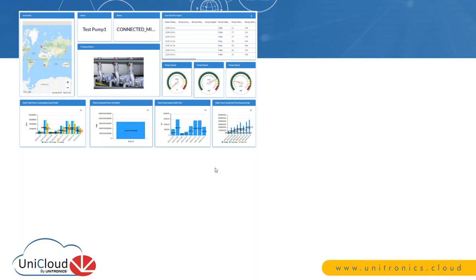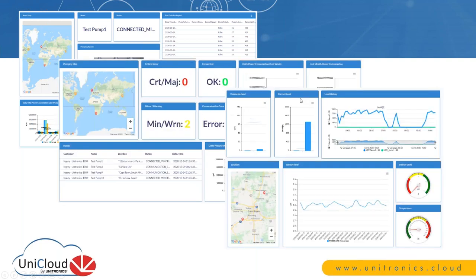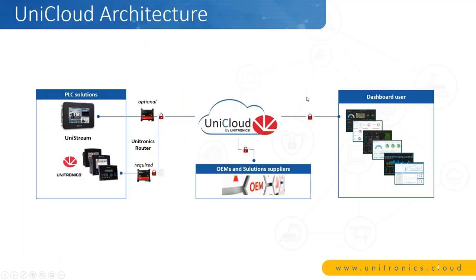As some of you already know, and for those of you who are new to this: UniCloud is a Unitronics IoT platform where we allow users to connect their machines using Unitronics PLCs or any other manufacturer PLC or smart device which can communicate with Unitronics-based protocols or Modbus, to upload the data — the telemetry the PLCs are generating — and to show the data using the dashboard that UniCloud provides. UniCloud is based on AWS infrastructure.